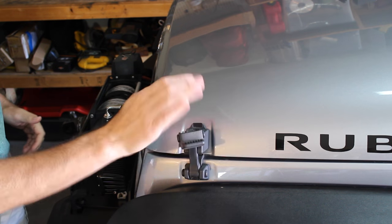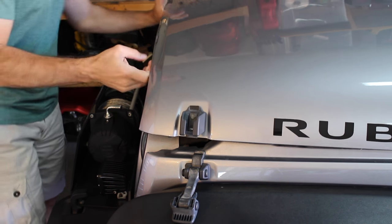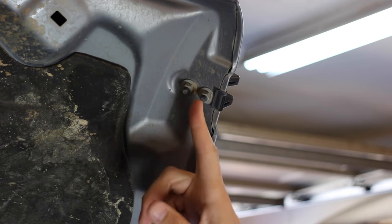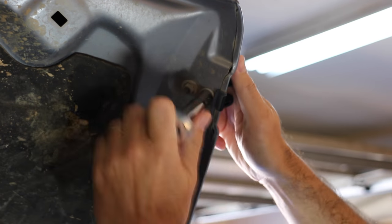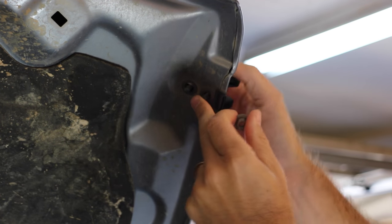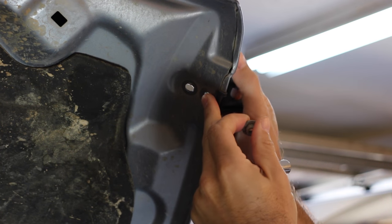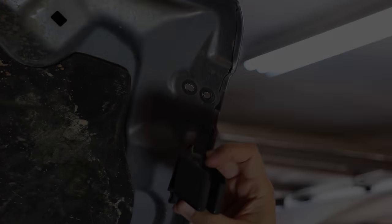Alright, first thing we're going to do is remove the factory hood latch. Okay, we're just going to remove these two 10mm nuts up here.